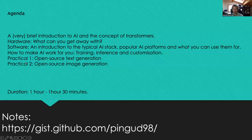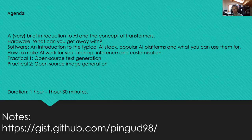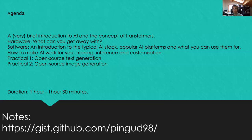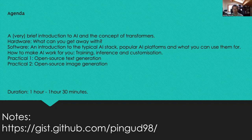We'll talk about AI very generally, covering core concepts like transformers. We'll look at the hardware you need — which is actually surprisingly low to start doing inference. We'll cover the software stack: Linux, Python, libraries, platforms, and some of the models you can run, plus how to adapt AI to your personal needs with customization and training. Interspersed, we'll have two exercises: open source text generation using an LLM and open source image generation using a diffusion model. We shouldn't take more than an hour and a half.